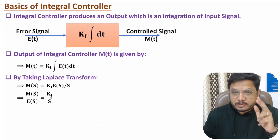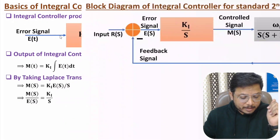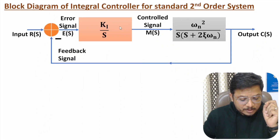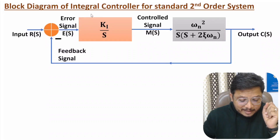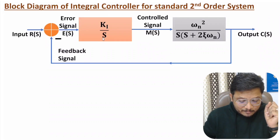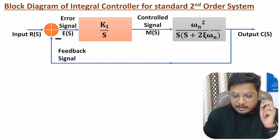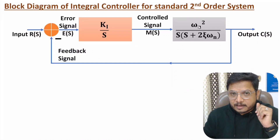Now let me explain the block diagram of the integral controller with a standard second-order system. Here we have the integral controller with gain Ki/s, unity negative feedback, and a standard second-order system with gain omega_n squared divided by s times (s plus 2 zeta omega_n), where omega_n is the natural resonance frequency and zeta is the damping constant.